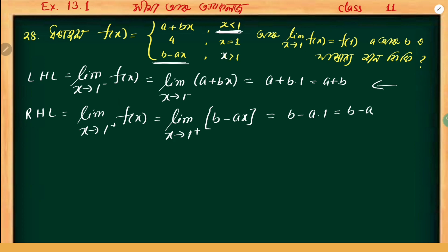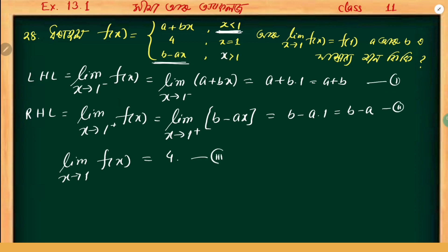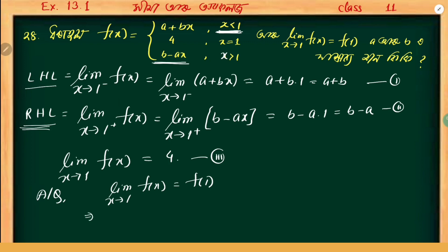For continuity, the limit as x tends to 1 of f(x) must equal f(1). This means left-hand limit equals right-hand limit equals f(1). So we have: a plus b equals f(1) equals 1, and b minus a equals f(1) equals 1. Therefore a plus b equals 4 and b minus a equals 4.